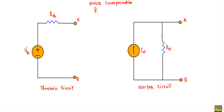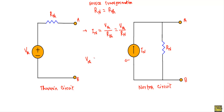The Norton resistance equals the Thevenin resistance numerically. To convert Thevenin to Norton, the Norton current In equals Vth divided by Rth (or Vth over Rn). To convert Norton to Thevenin, Vth equals Rn multiplied by In (or In multiplied by Rth).